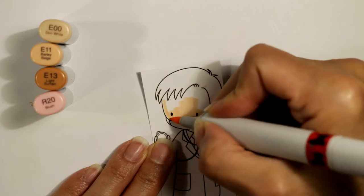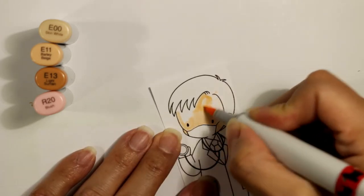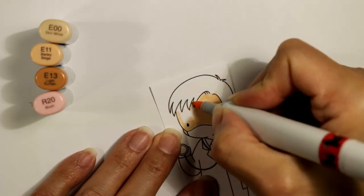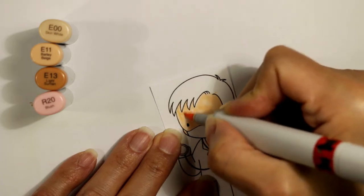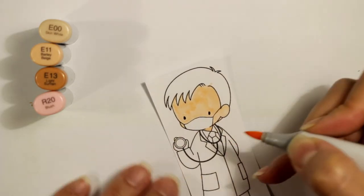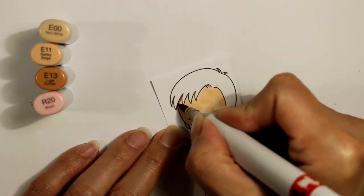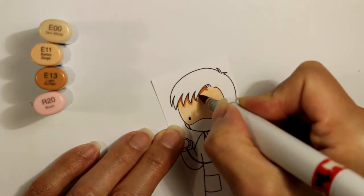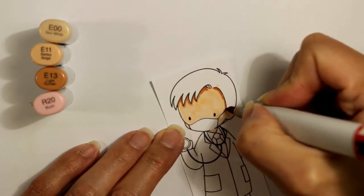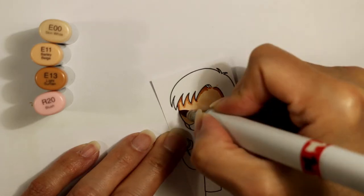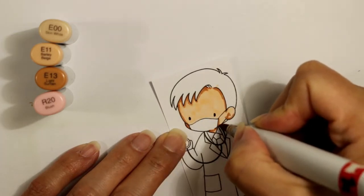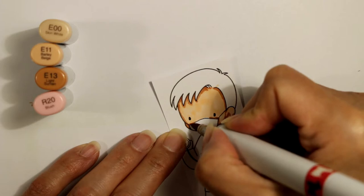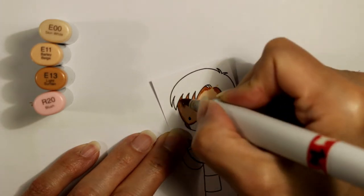This skin color combination is actually a set that's available on Amazon for a really good price. I'm going to put a link in the description box below to this skin tone set. It even includes the R20 for the blush. And now I'm showing you guys, I laid down an E00 and then I am putting in the darkest color, the E13, all around the edges, kind of where the shadows would be.